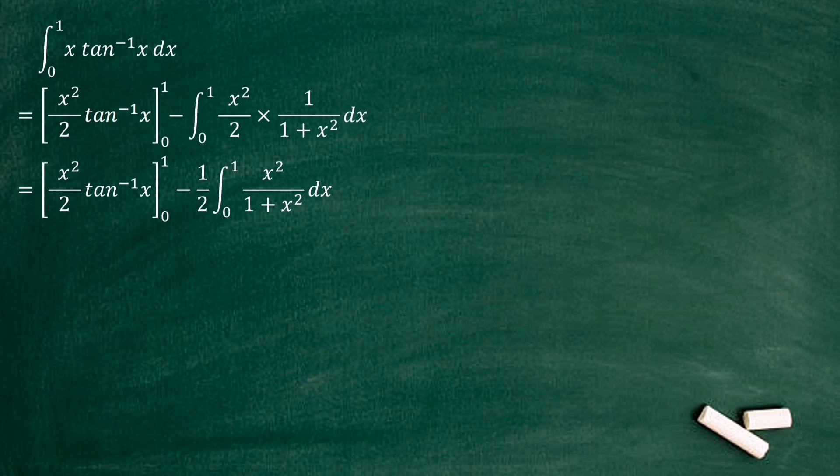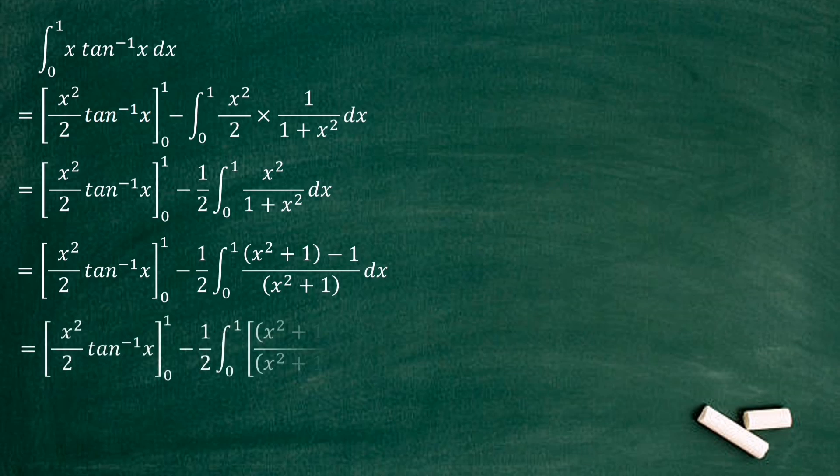Numerator value x squared we can write as x squared plus 1. To cancel out this plus 1 value we can put minus 1. After that we can divide numerator values from the denominator value. First one x squared plus 1 over x squared plus 1, second one 1 over x squared plus 1.